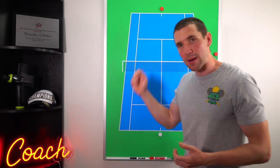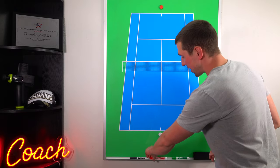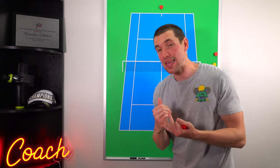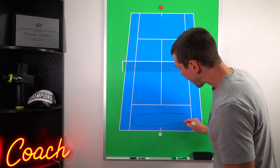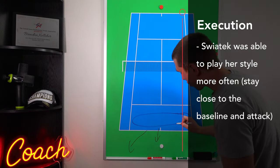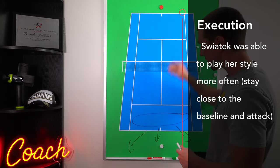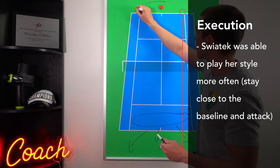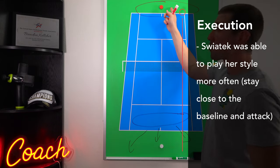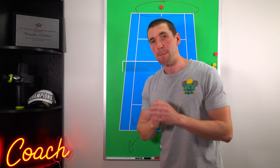Even though Jabeur used her slices, used the variety, and used the drop shot, Swiatek just adapted better and was able to use her game plan a little bit more often. Part of what she did was really make sure she hits deeper in the court. Swiatek did a great job hitting that ball deeper, pushing Jabeur back, and that makes it harder for Jabeur to hit a drop shot or use variety if she's more on defense and being pushed back in the court. So Swiatek spent more time in her comfort zone compared to Jabeur, and therefore she was able to dictate play more often and win more points.